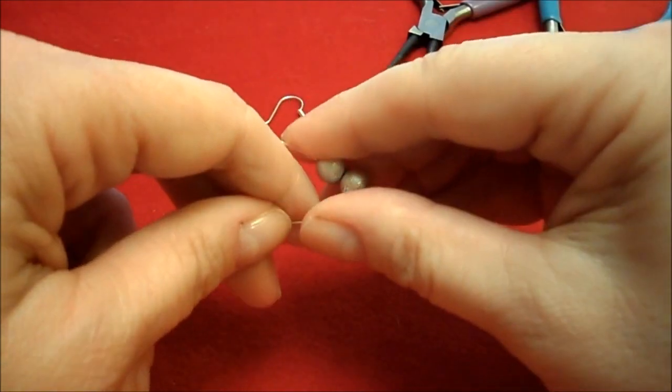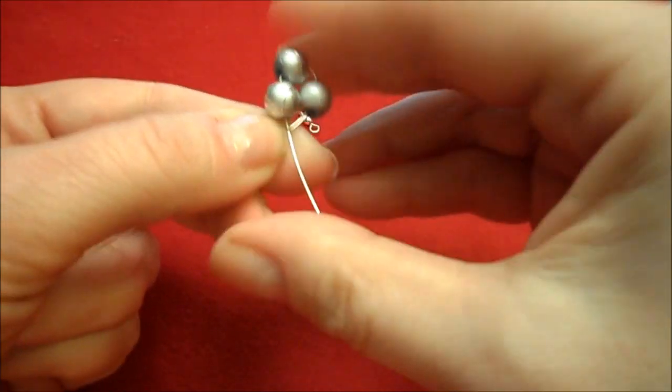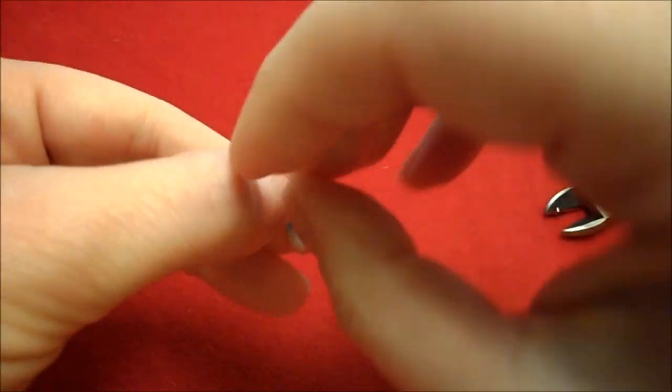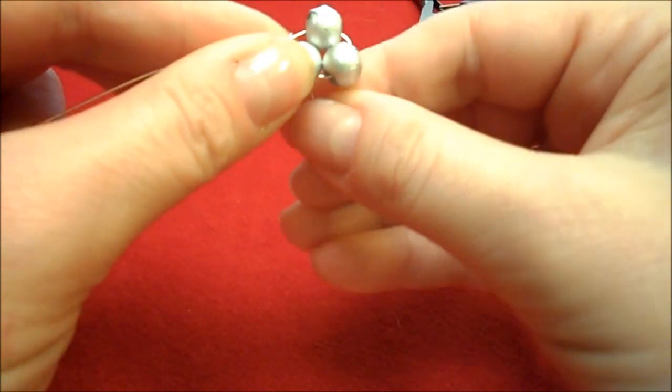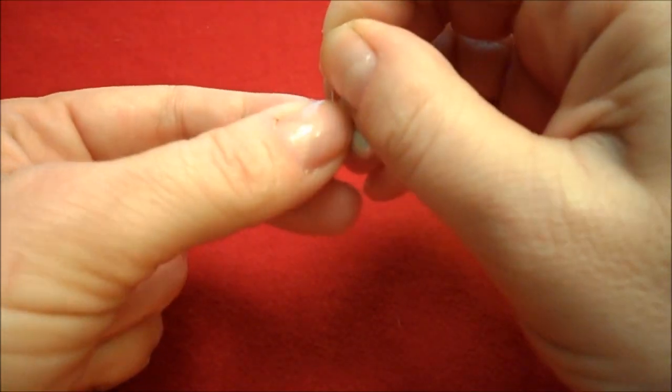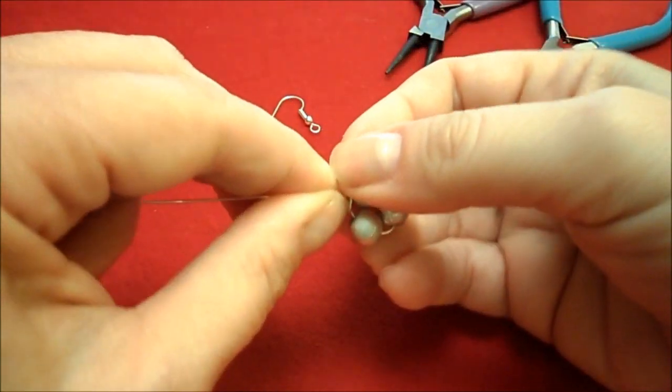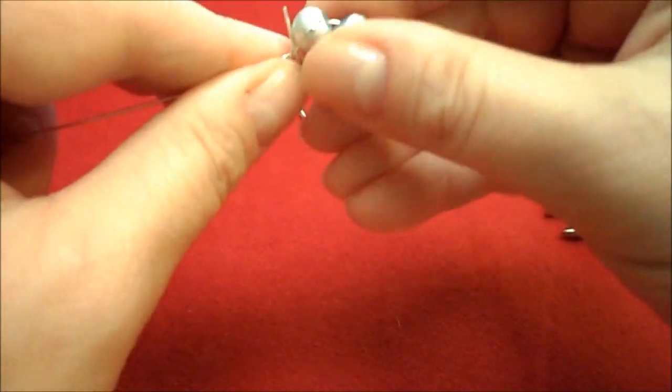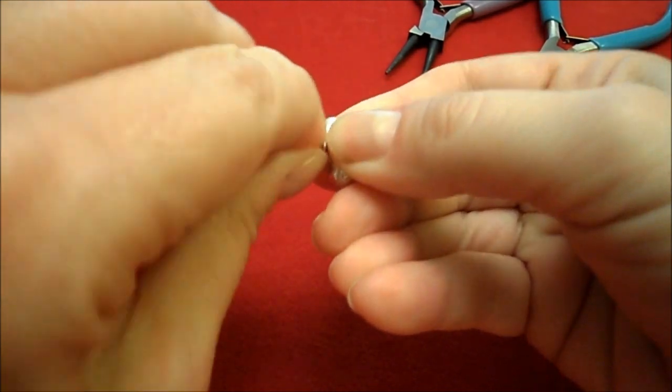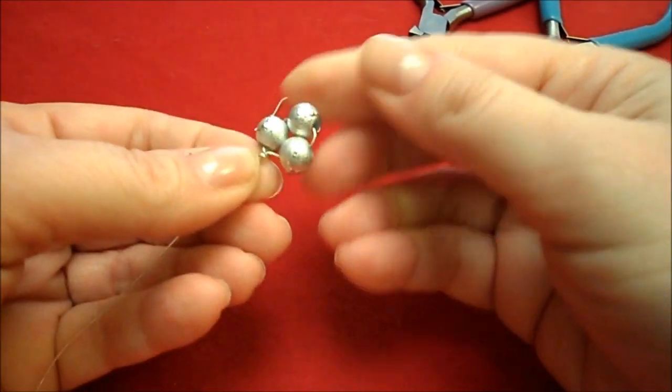Once they're threaded you want to put them together and I'm going to twist the wire around to secure it. 24 gauge is really easy to work with as well.